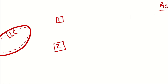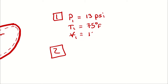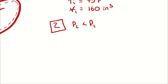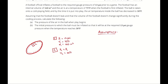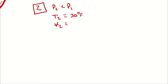I'm going to describe that as a process between two state points. State one, the beginning of the cooling process, has a pressure inside the ball of 13 PSI, a temperature of 75 degrees Fahrenheit, and a volume of 160 cubic inches. At state two, once it has cooled, the pressure has dropped to something less than state one. T2 equals 30 degrees Fahrenheit. Because the problem told us the volume doesn't change significantly, V2 equals V1.